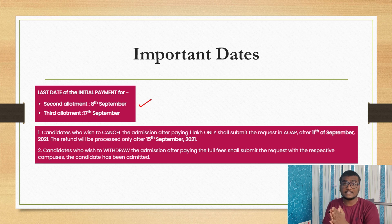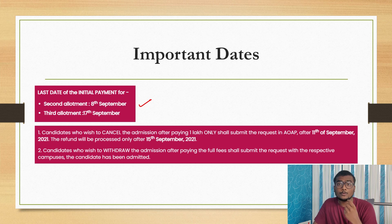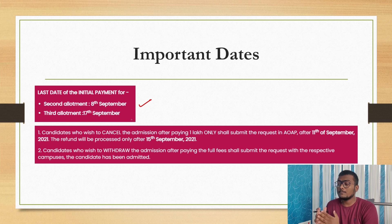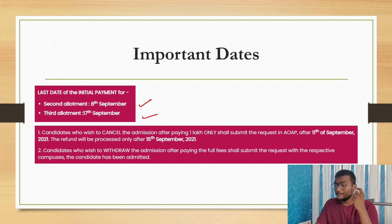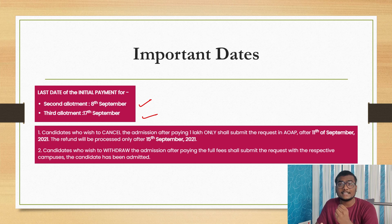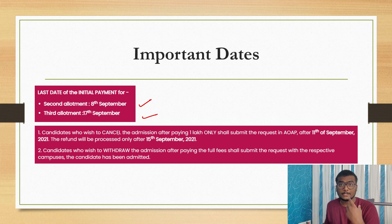Talking about some of the important dates: today is 7th September, so tomorrow, 8th September, is the last date for initial payment. Those who wanted to pay the initial payment must do so by 8th September. For the third allotment, 17th September is the last date for the initial fee payment. Those who got newly allotted in the second round need to complete their initial fee payment of 1 lakh rupees before 8th September.